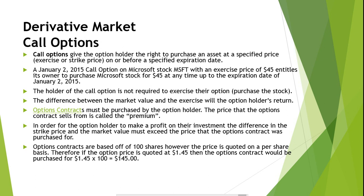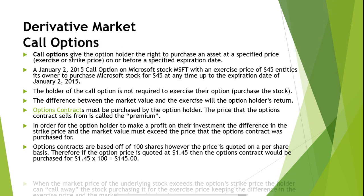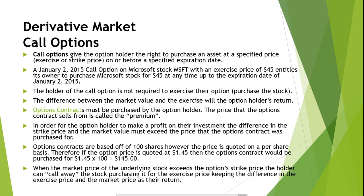When the market price of the underlying stock exceeds the option strike price, the holder can call away the stock, purchasing it for the exercise price, keeping the difference in the exercise price and the market value as the return. If the option is left unexercised, it expires and has no value. Calls provide profit when prices increase, therefore purchasers of call options are generally bullish on the underlying asset.